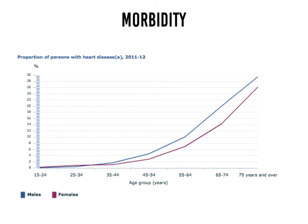Looking at heart disease, we can see the proportion of people that have heart disease as a percentage, with a comparison between males and females. Males are more likely to have heart disease than females as people get older — from the 35 to 44 age group onwards, as of 2011 and 2012. We can also see that as people age, the likelihood of having heart disease increases.